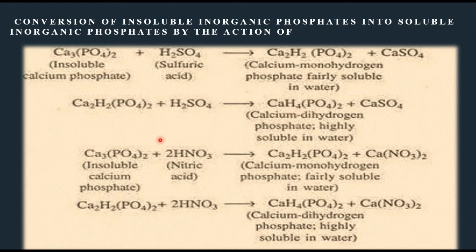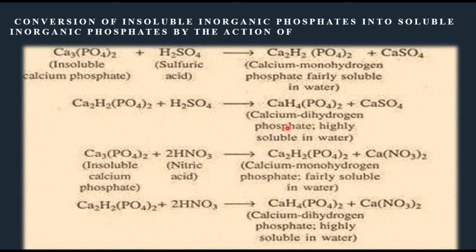Nitric acid similarly releases monohydrogen phosphate (fairly soluble) and dihydrogen phosphate (highly soluble) from insoluble calcium phosphate. In this way, microorganisms are involved in converting insoluble inorganic phosphate into soluble inorganic phosphate, which dissolves in water and can then be absorbed by plants.